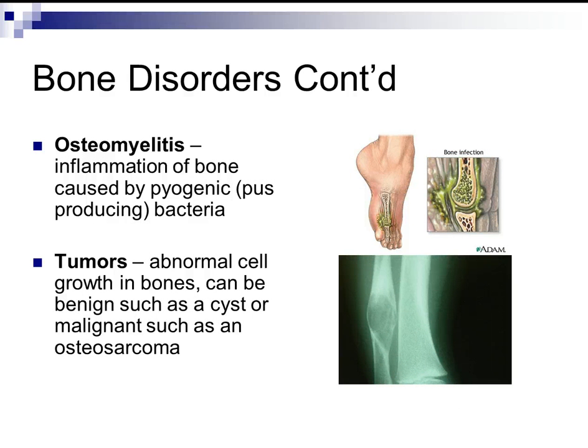Osteomyelitis is the inflammation of bone caused by pyogenic, or pus-producing, bacteria. The bacteria get into the bone and start eating away at it, causing inflammation and production of pus.